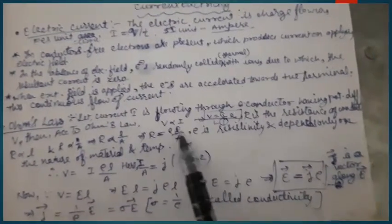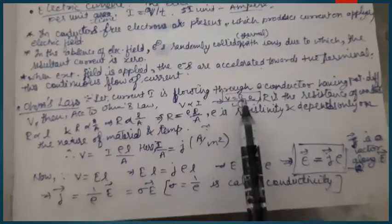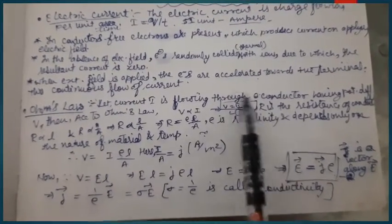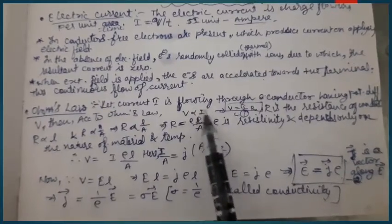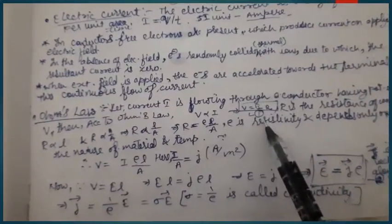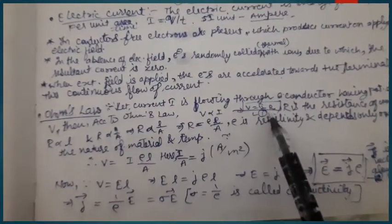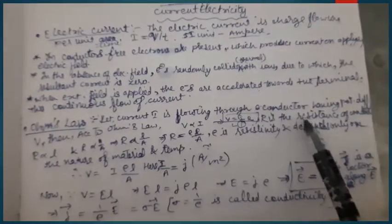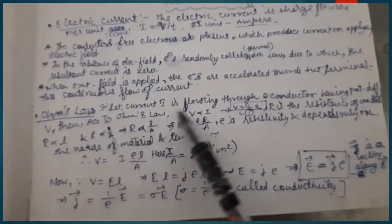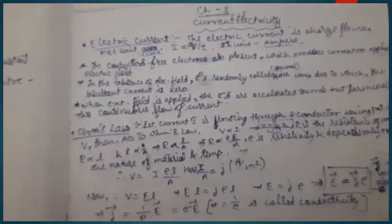Ohm's law gives a relation between potential difference and current. It states that V is directly proportional to I, or vice versa. We can write V = IR, where R is the resistance of the conductor, V is the potential difference, and I is the current. This resistance R is directly proportional to the length of the conductor.